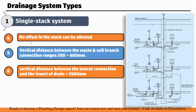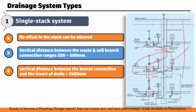The fifth point is that no offset in the stack is allowed. The pipe must run straight vertically. If there is a change in layout requiring an offset, you must take a separate pipe — no offset is permitted in the single stack.